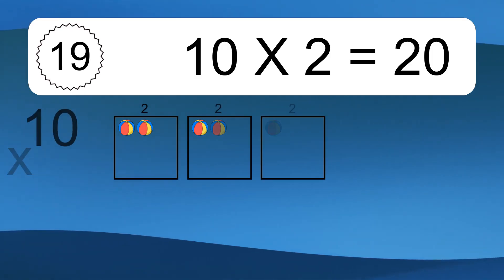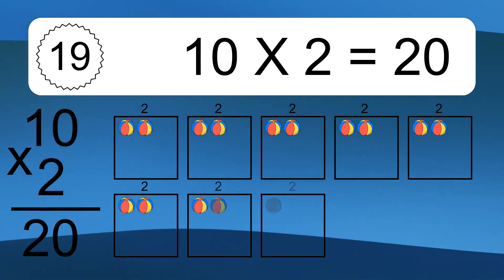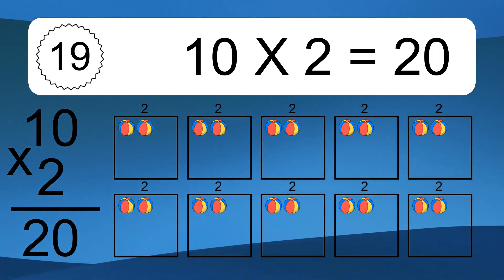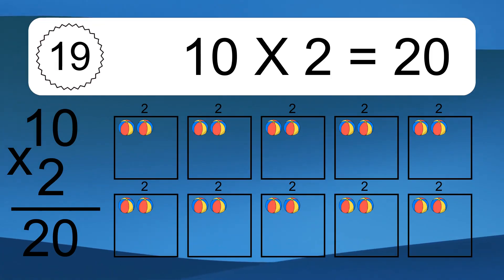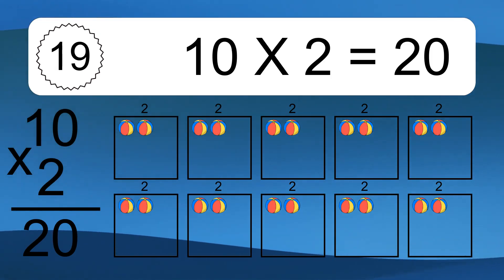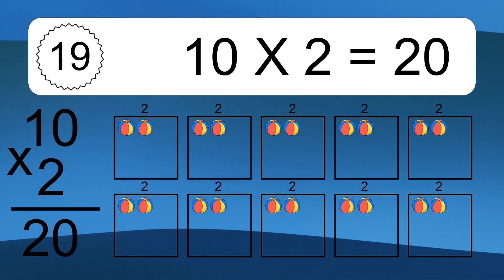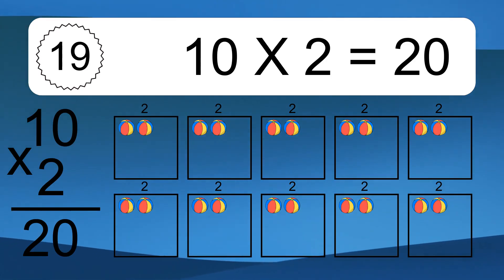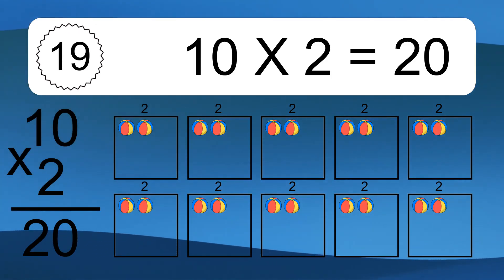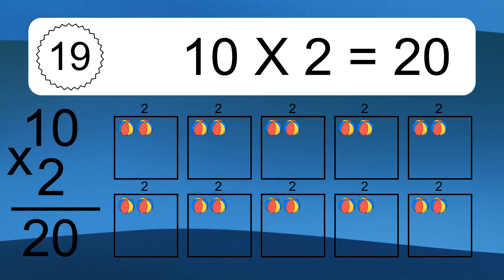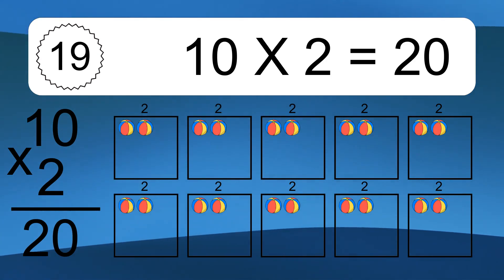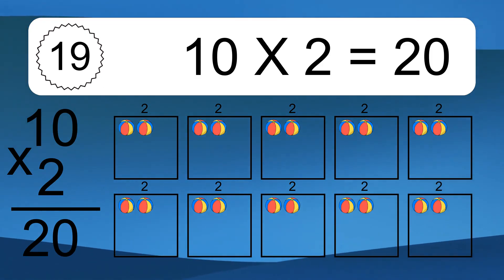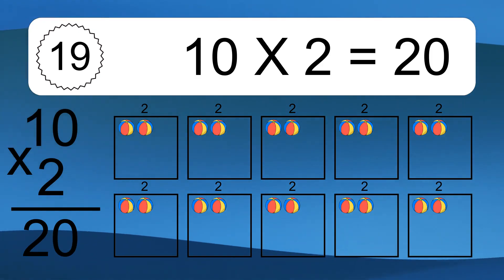10 times 2 equals what? 10 times 2 equals 20. We have 10 boxes, and each box has 2 colorful balls inside. If you count all the balls in all the boxes together, you will have 10 times 2 balls. This equals 20 balls.